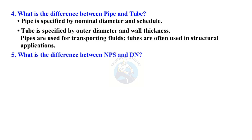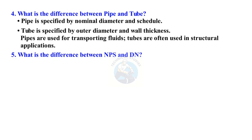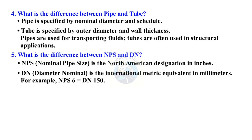What is the difference between NPS and DN? NPS, or Nominal Pipe Size, is the North American designation in inches. DN, or Diameter Nominal, is the international metric equivalent in millimeters. For example, NPS 6 equals DN 150.